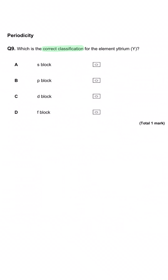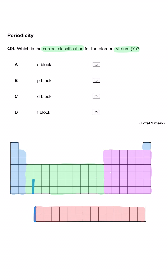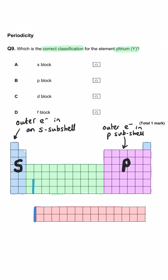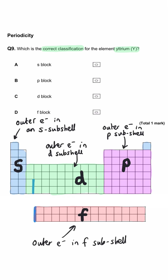Which is the correct classification for the element yttrium (symbol Y)? The periodic table is split into blocks: group 1, group 2 and helium are S block; groups 3 through to 0/8 are P block; the middle is D block because outer electrons occupy d subshells; and the lanthanides and actinides at the bottom are F block. Yttrium is in period 5 as the first of the D block elements, so the answer is C — it is a D block element.